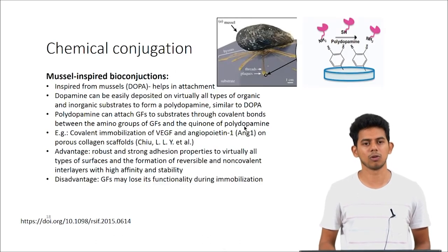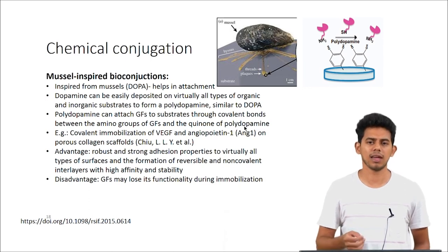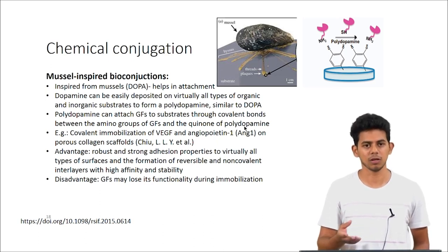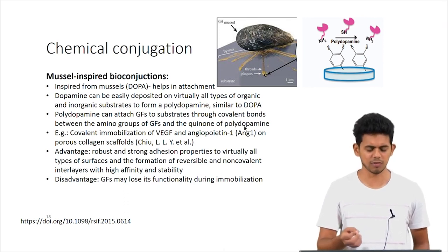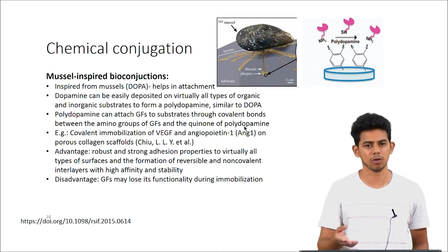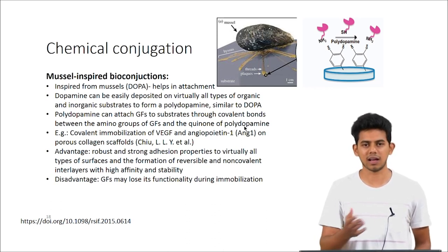The second chemical conjugation technique is mussel-inspired conjugation. Mussels are organisms that grow on rocks in the sea attached very strongly. They use a chemical called DOPA which can very strongly attach to almost all surfaces. Similarly, polydopamine has been developed using dopamine, which has a similar property to DOPA. This polydopamine can be coated on almost any scaffold surface and growth factors can be made to conjugate onto it. The advantage is strong adhesion with high affinity and stability, so there is no burst release or uncontrolled release. The disadvantage is that, as with other chemical conjugation techniques, the growth factor can lose functionality during immobilization.